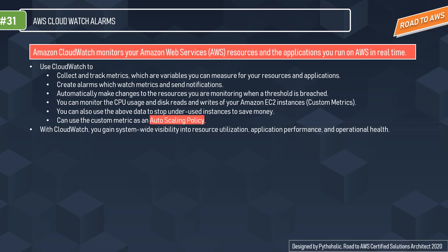You can create alarms that watch metrics and send notifications when specific conditions occur. CloudWatch can automatically make changes to a monitored resource when a threshold is breached. You can also monitor CPU usage and disk reads and writes of your EC2 instances using custom metrics, and use that data to stop underused instances to save money. Custom metrics can also be used as an auto scaling policy.